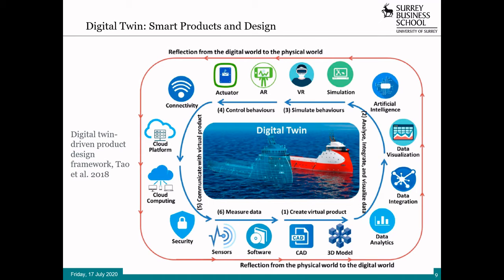In terms of intelligent products — products capable of some sort of digital processing when used in the field, such as a modern car — actual data on how the product is performing in the real world and how it's being used by the customer can be sent back to the manufacturer. That data can be processed and used in the loop of producing new product designs. This has a lot to say about how we capture and process data from intelligent products and how we design and manufacture highly customized products for a future customer base with a batch size of one.